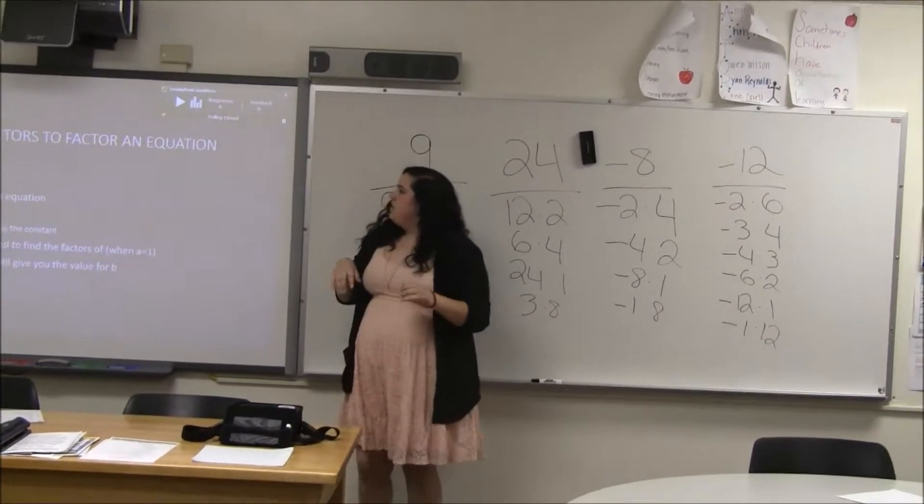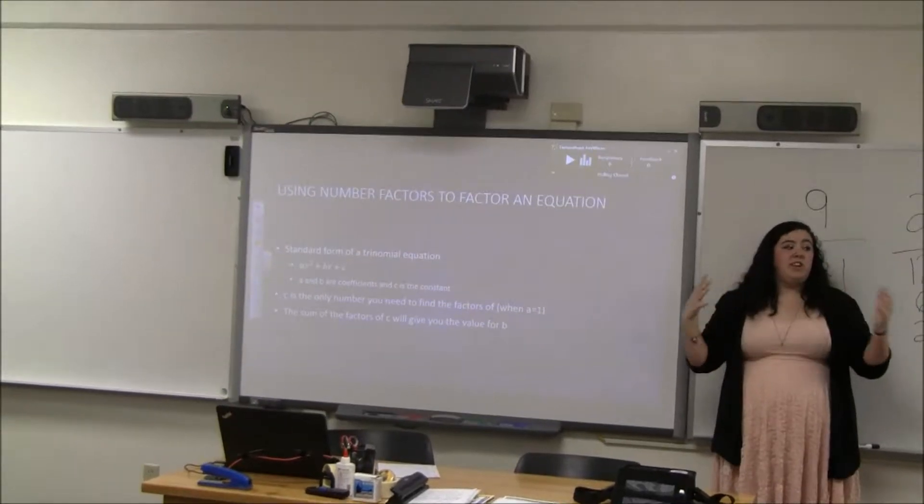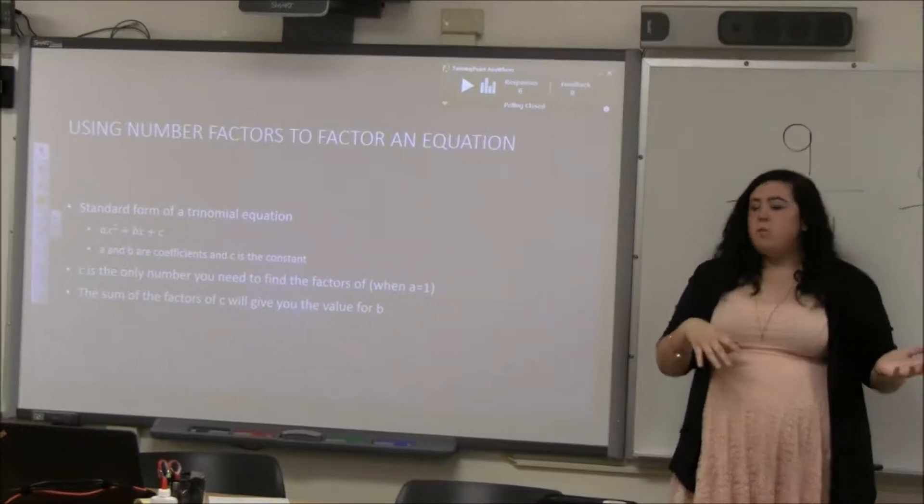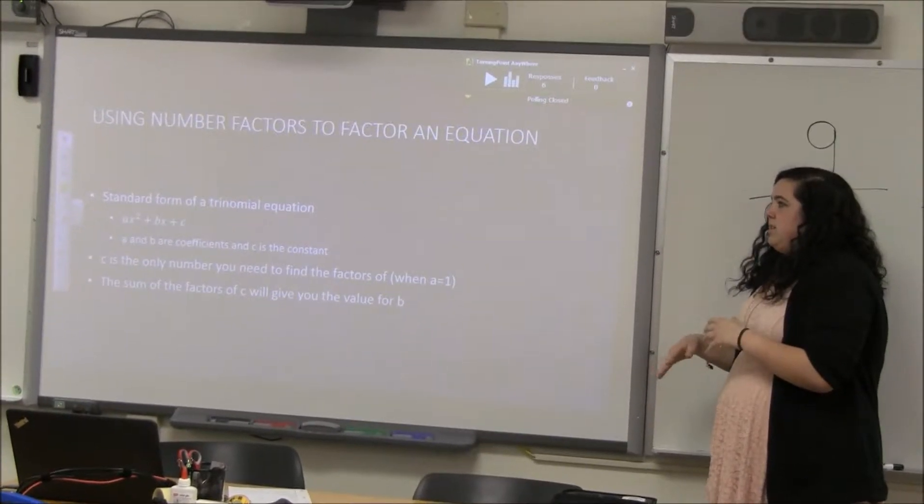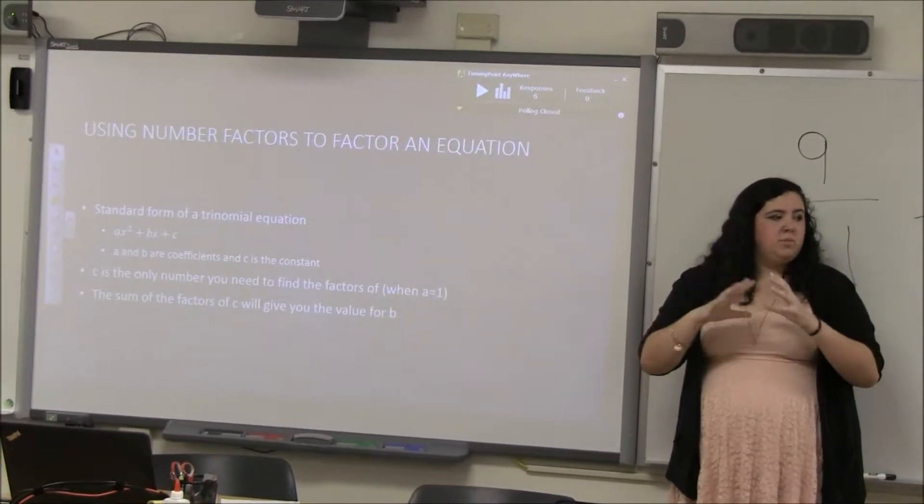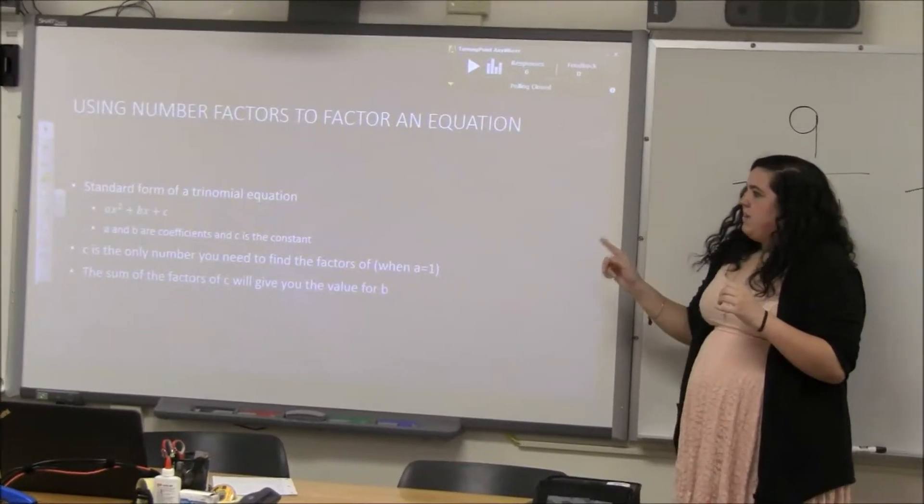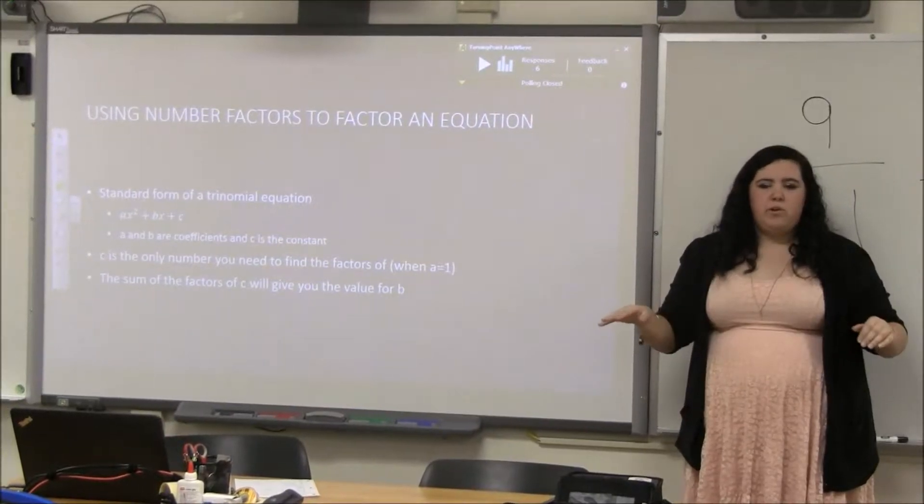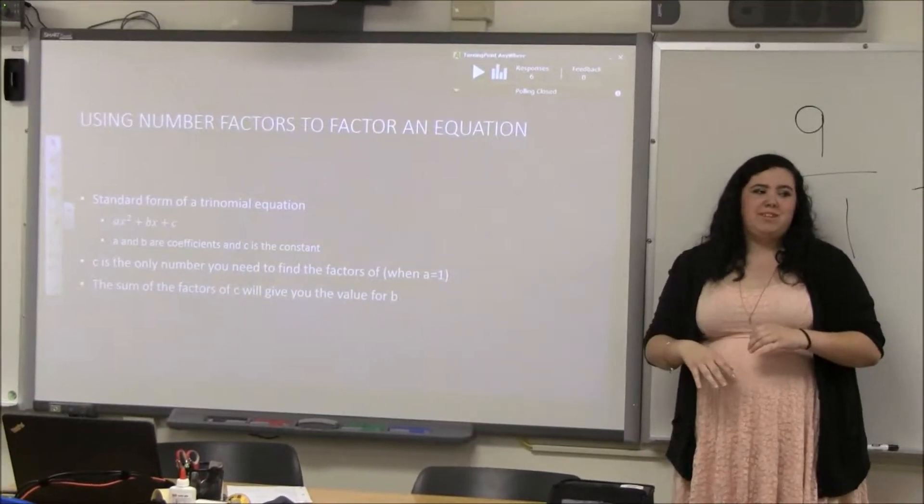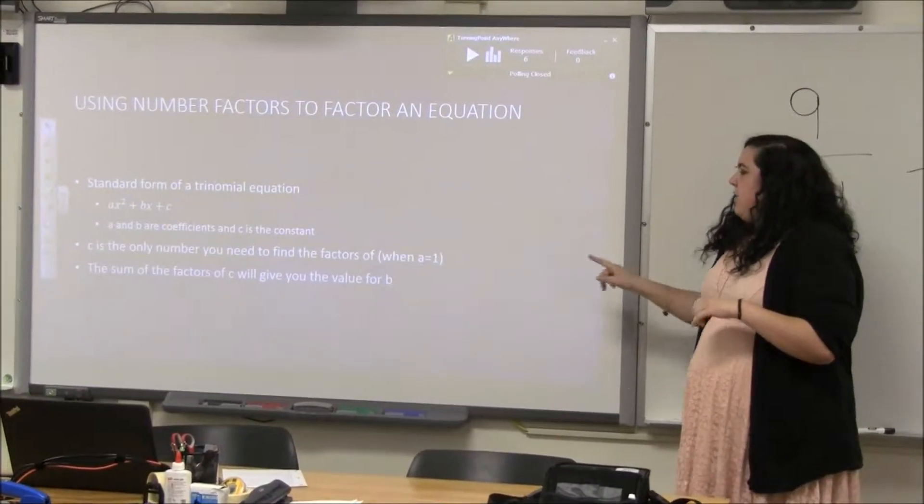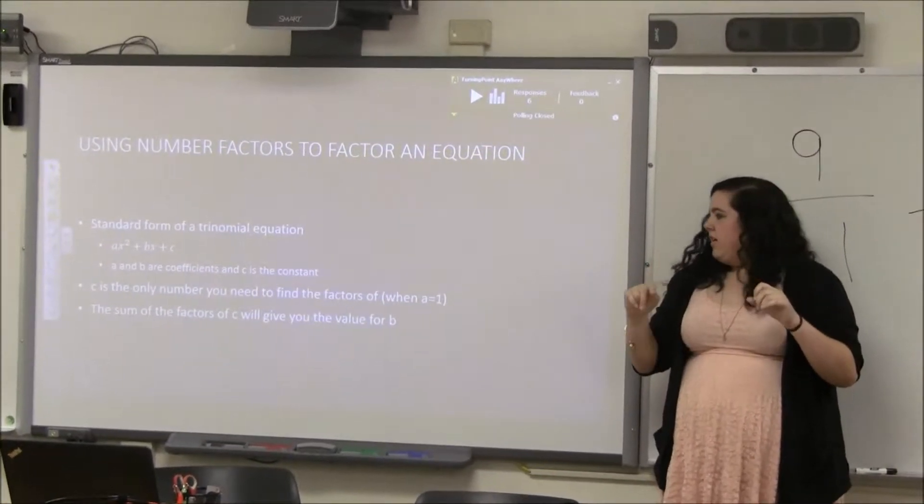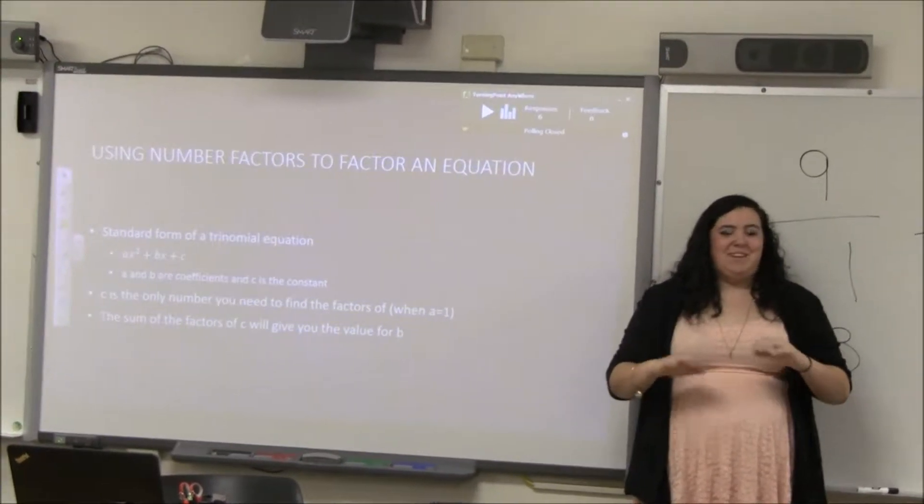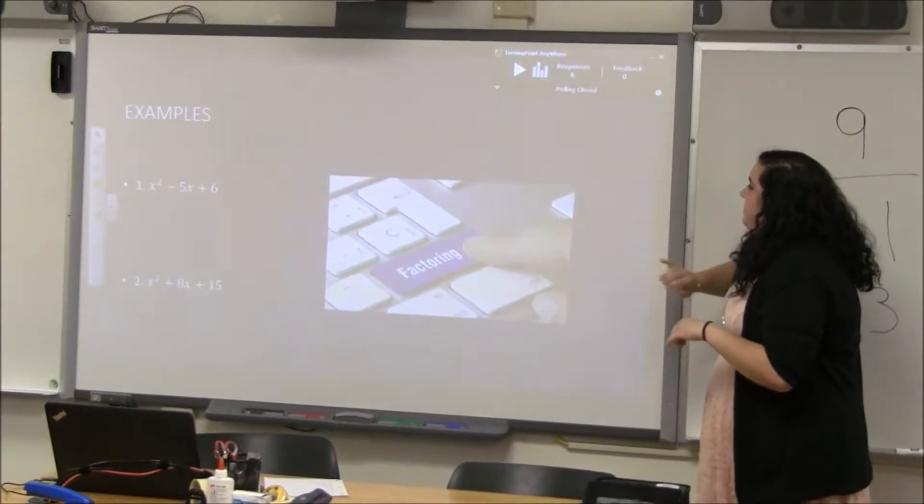Alrighty. So, using those factors to factor an equation now. The standard form of a trinomial equation you saw from the warmup was ax squared plus bx plus c. So, c is a constant which means it's just a number by itself. And a and b are going to be separate numbers in front of the variables. And we're only going to work with equations where a equals 1 today just to make it easy. And the sum of those factors of c are going to give you the value for what b should be. That sounds really confusing right now, but we're going to do some examples.